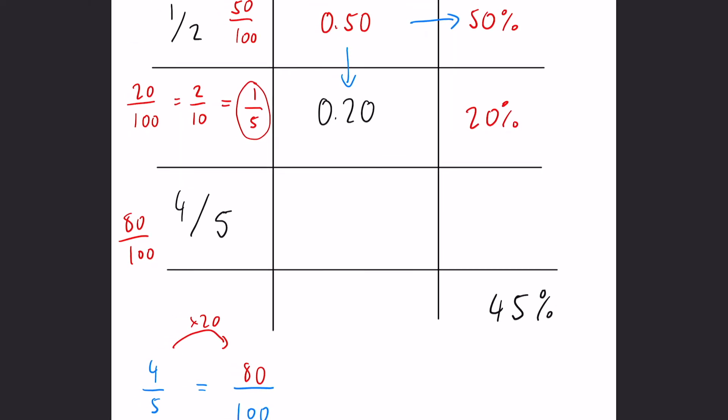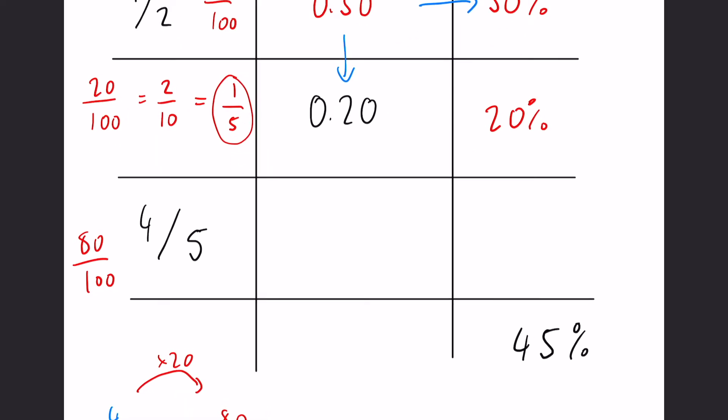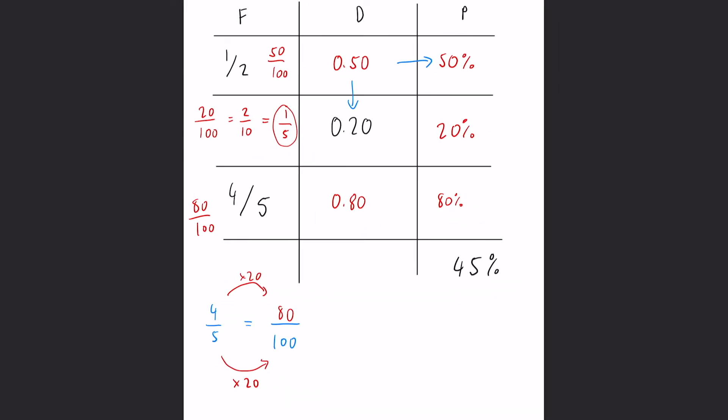Now that is very useful, because just like the other two rows we've already done, we can simply just convert them across, because it's going to be 0.8 or 0.80 and 80%. So nothing too difficult there.